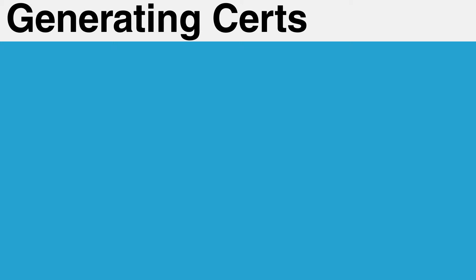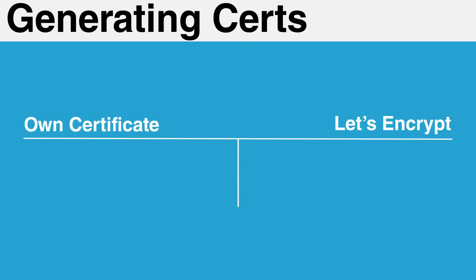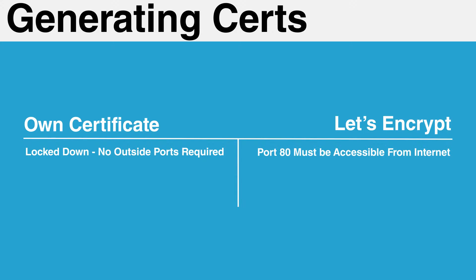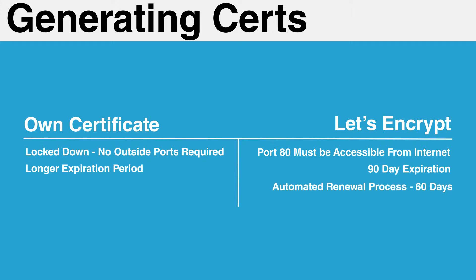There are benefits and drawbacks to each certificate generation method. Uploading your own certificate will allow you to completely lock down your MobileTogether server, while using the automated Let's Encrypt method will require you to have port 80 open and always visible to the public. Certificates you upload also tend to last significantly longer, while Let's Encrypt certificates expire after only 90 days. The renewal process, however, is completely automated when you utilize Let's Encrypt, so this can be less of an issue for most users.